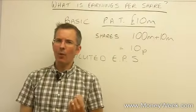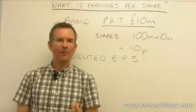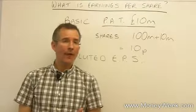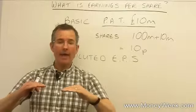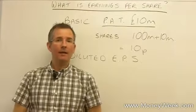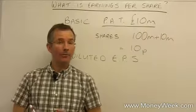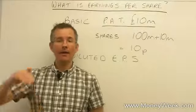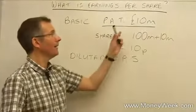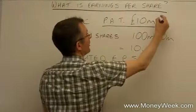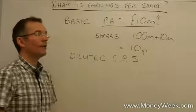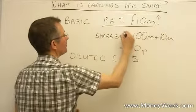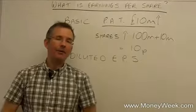Other examples of dilutive events are warrants outstanding — pieces of paper that allow you to buy shares suddenly being exercised — or the conversion of debt into shares. If a company has debt outstanding and the lenders decide they'd like shares in the company instead of repayment, debt would disappear from the balance sheet and the number of shares issued would rise. That would boost profit after tax a little bit, because there's no longer an interest charge on the debt in the profit and loss account, but it would also increase the number of shares in issue, and on balance it would still probably be dilutive.